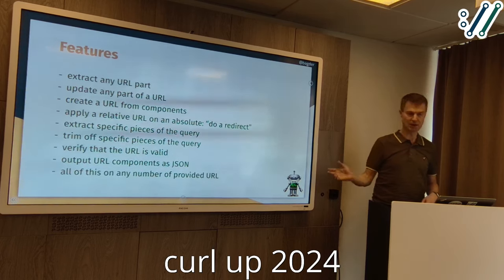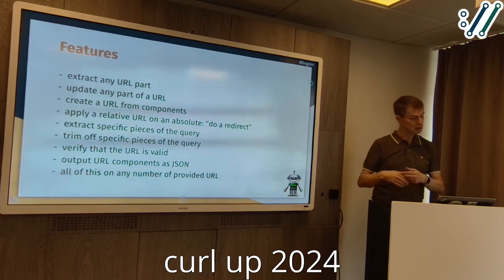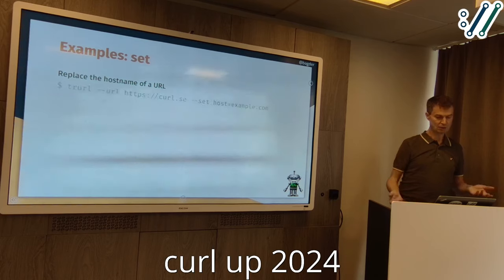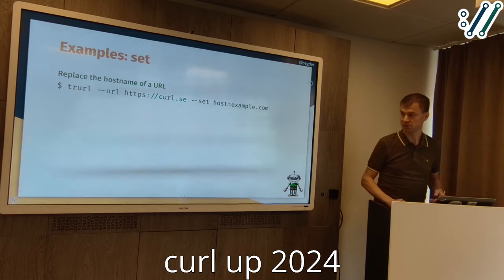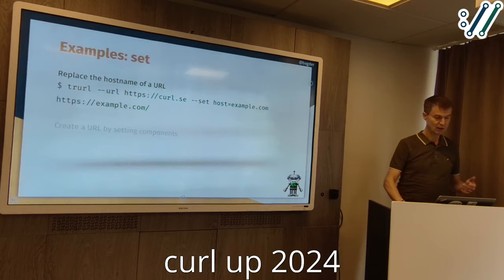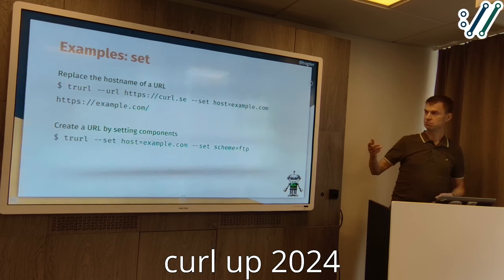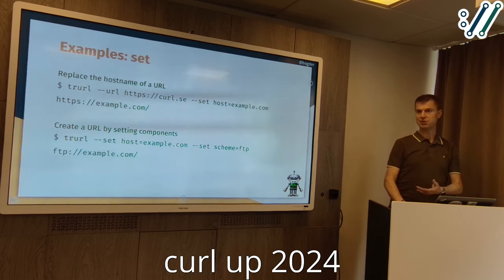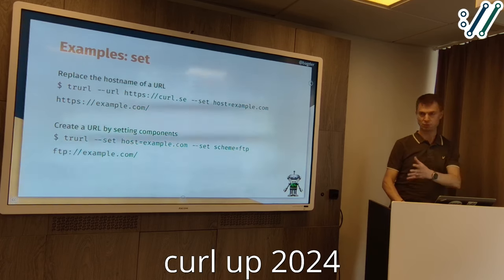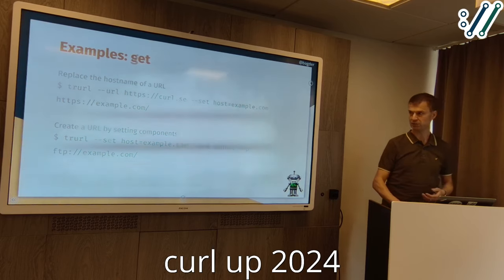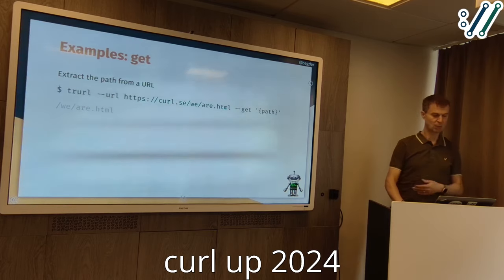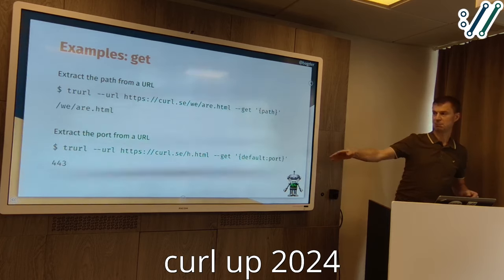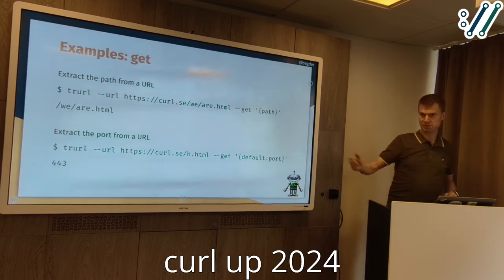You can do all of this on any number of URLs on the command line. For example, if you have a URL and want to change the host name, just ask it to set the host name and you get an output new URL. You can create a URL out of components — set a host name, set a scheme — and get the URL as output. Basically, it removes the knowledge of how a URL works from the script. You can extract parts: get the path part, get the port number.